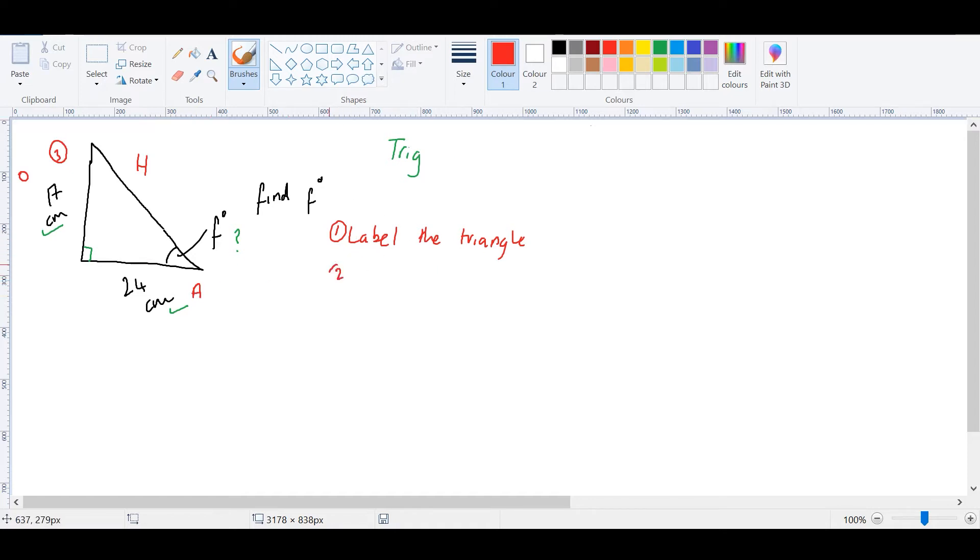Second step, identify the rule that we need. So again, the rule is SOHCAHTOA. And let's underline what we have and what we need to work out. So we have an adjacent, so we underline all the A's, and we have an opposite, so we underline all the O's. And it's the one with the most, or with the two lengths underlined that we need, so it's this one here.